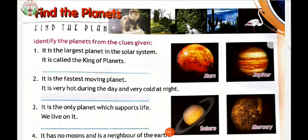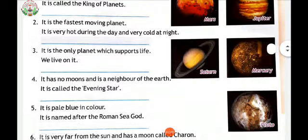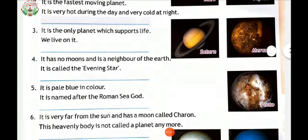It is the only planet which supports life. We live on it. It's earth. It has no moons and is a neighbor of the earth. It is called the evening star. It's Venus. It is pale blue in color. It is named after the Roman sea god. It's Neptune.